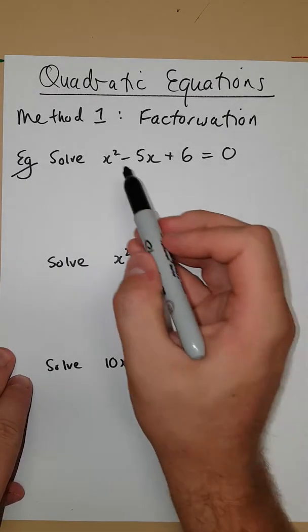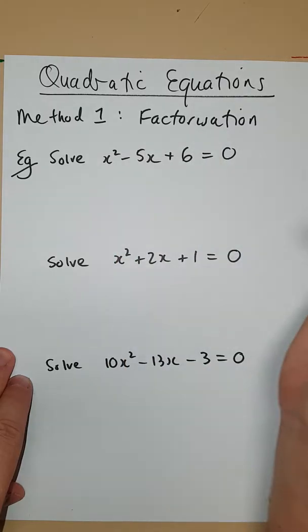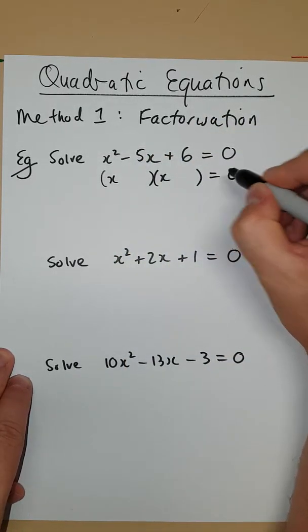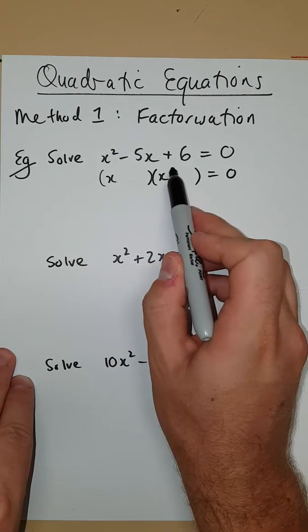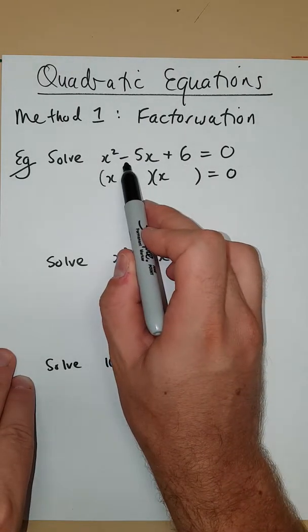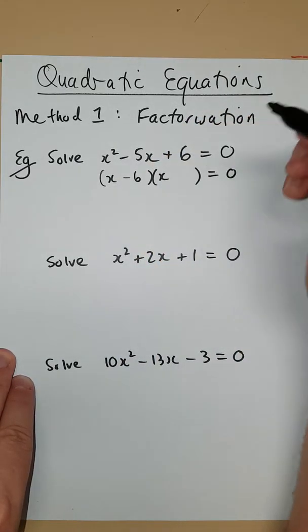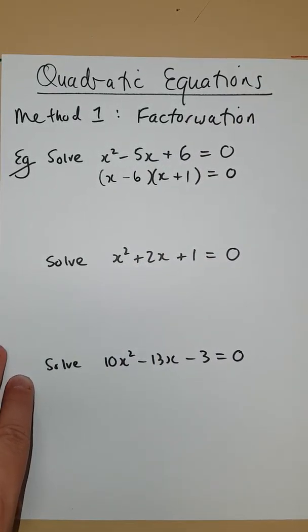So first one, it's monic. Alright, so we have an easy technique here. We need to set it up in some brackets that look like this. The two numbers that go inside, got to times to give 6 and add to give negative 5. So those numbers would be negative 6 and positive 1.